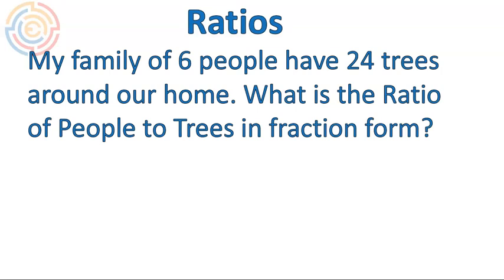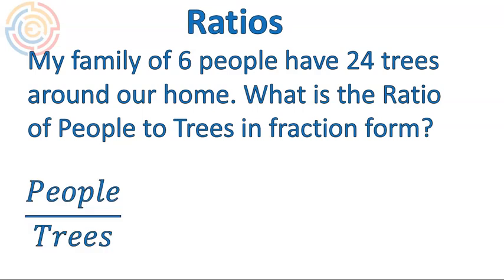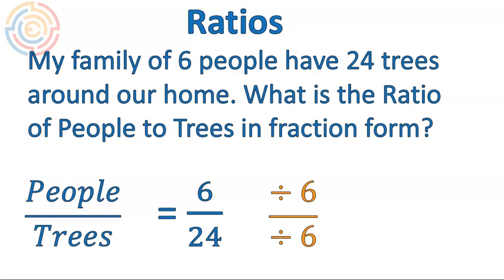Here's a question that we could solve using ratios. My family of six people have 24 trees around our home. What's the ratio of people to trees in fraction form? Whenever you're writing something in fraction form, I write it out — people to trees — so I always know people are on the numerator and trees are in the denominator in every fraction I write. So the ratio of people to trees is 6 to 24. Whenever you have a fraction you've got to reduce it to lowest terms. We divide by our greatest common factor in both top and bottom and we get a ratio of 1 to 4. In other words, for every one person there are four trees planted around our house.